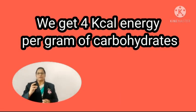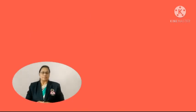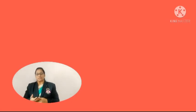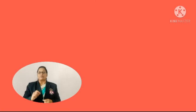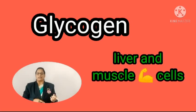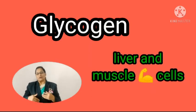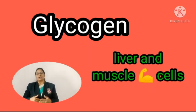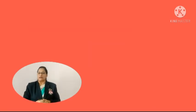If there is extra carbohydrate in your body — meaning extra glucose — it is stored in the form of glycogen in the liver cells as well as muscle cells. When your intake of carbohydrate is less, that glycogen is used for production of energy. So this is about carbohydrates.